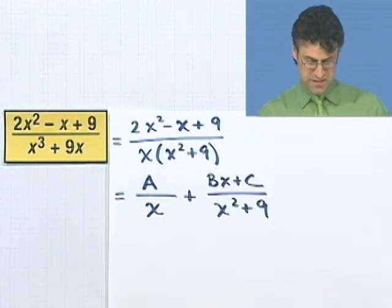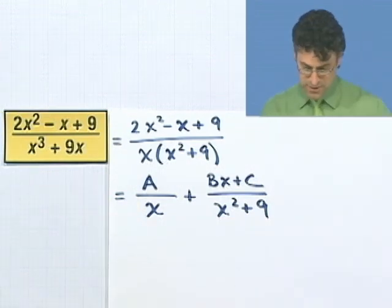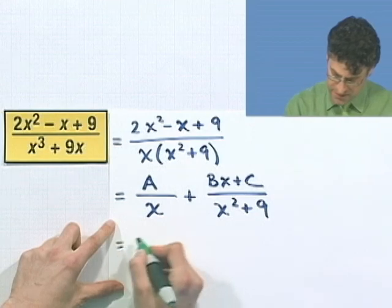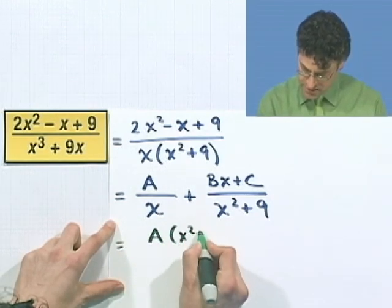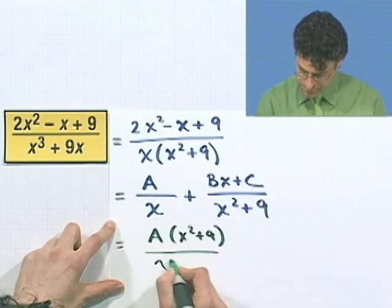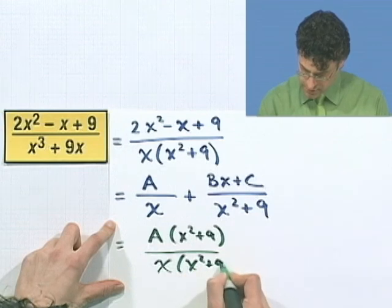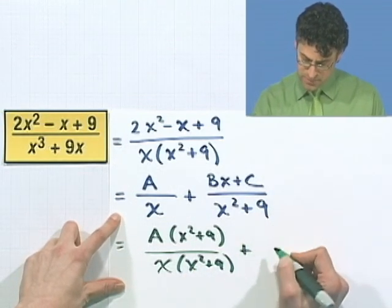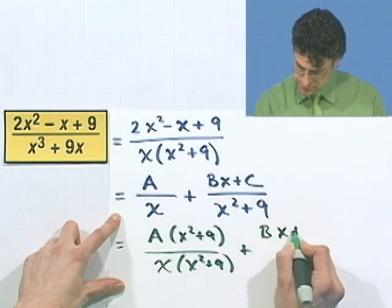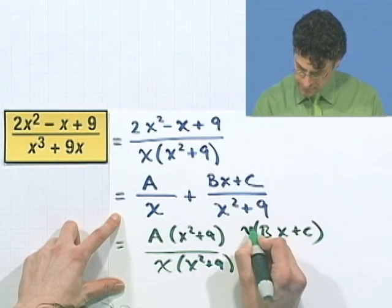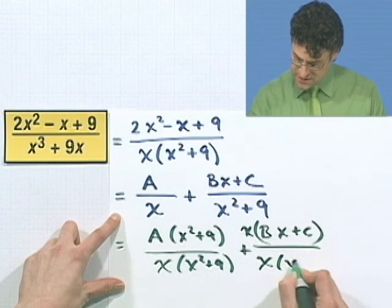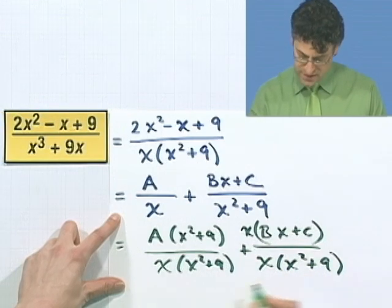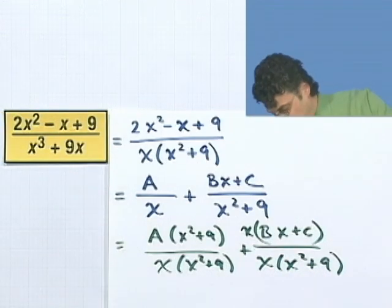Now everything else is the same. We have to get a common denominator, and we combine. So I have to multiply top and bottom here by x squared plus 9. And then I multiply top and bottom here by just x. And so I see the common denominator, which is awesome. And when I combine, what do I see? Well,